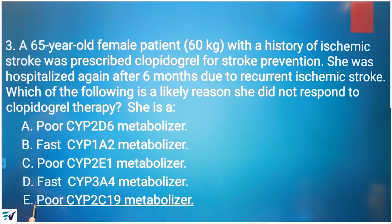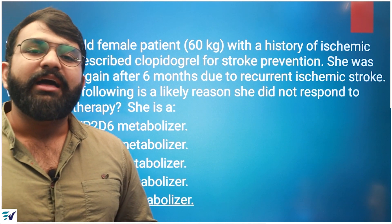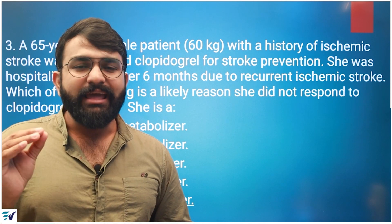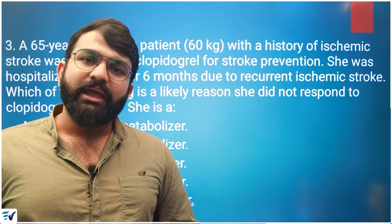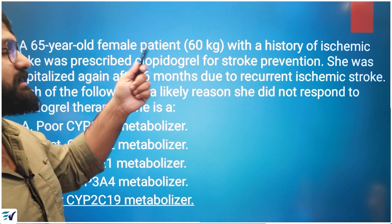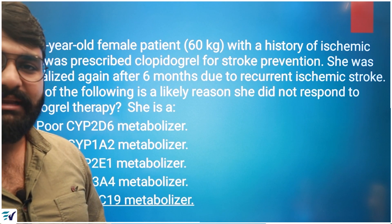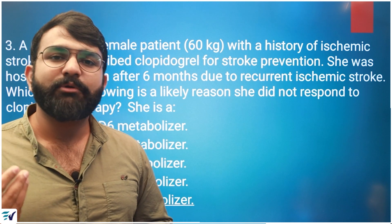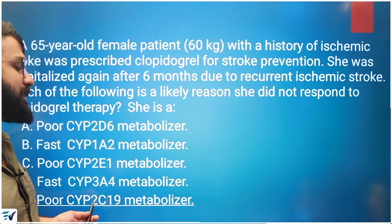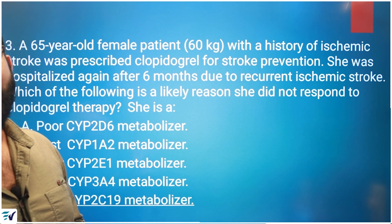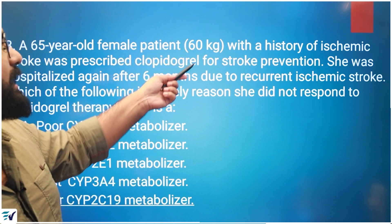Because this patient is a poor CYP-2C19 metabolizer, the enzyme cannot adequately convert clopidogrel into its active form. Without sufficient active drug, the antiplatelet effect is absent. Therefore, clopidogrel as a prodrug cannot be activated properly in this patient, explaining the lack of therapeutic response.